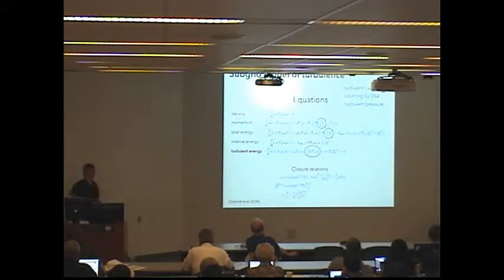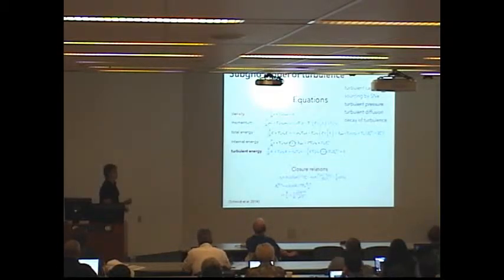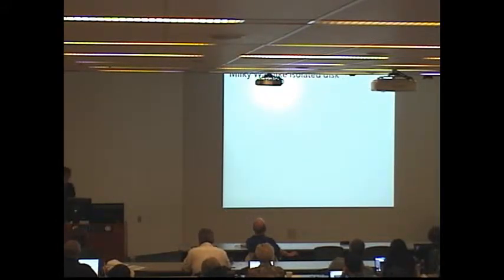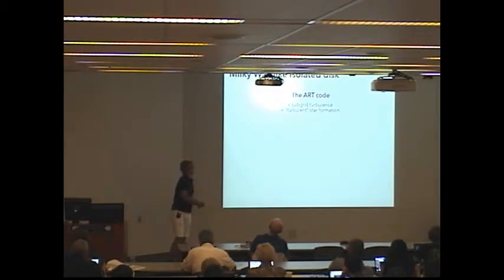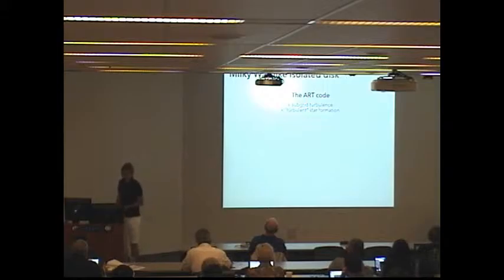This model includes, the turbulence is coupled to resolved motions. It's sourced by turbulent cascade from resolved motions into sub-grid scales. It can be sourced also from small scales by supernova. It takes into account turbulent pressure, turbulent diffusion of energy, and also in this model turbulence decays into heat over physically motivated time.